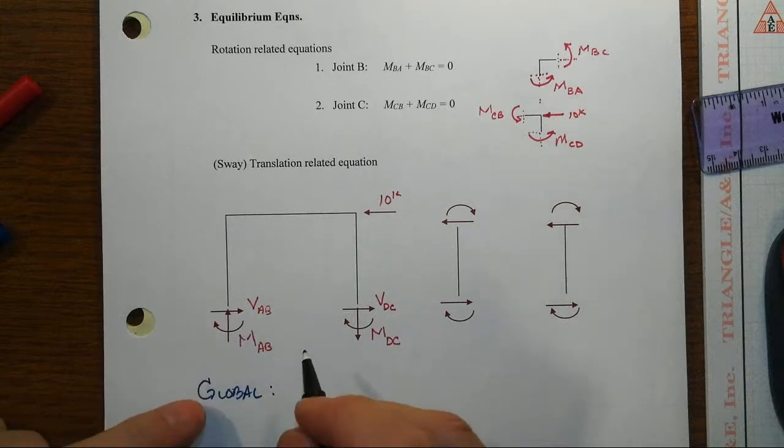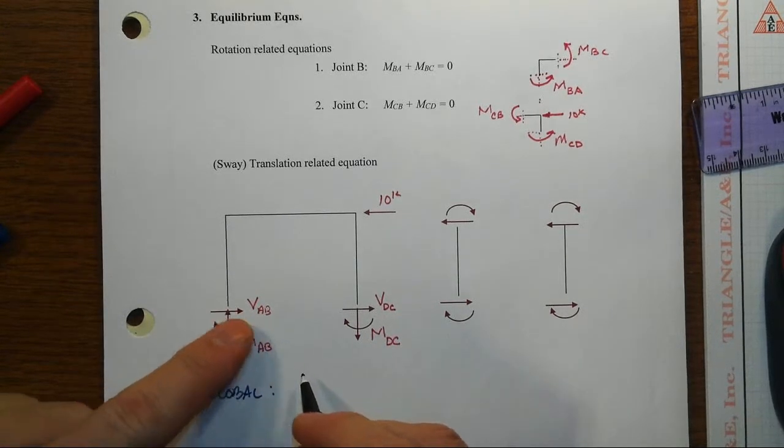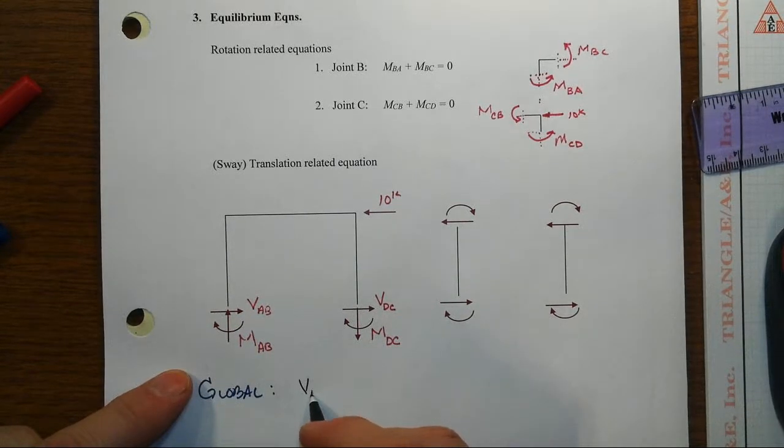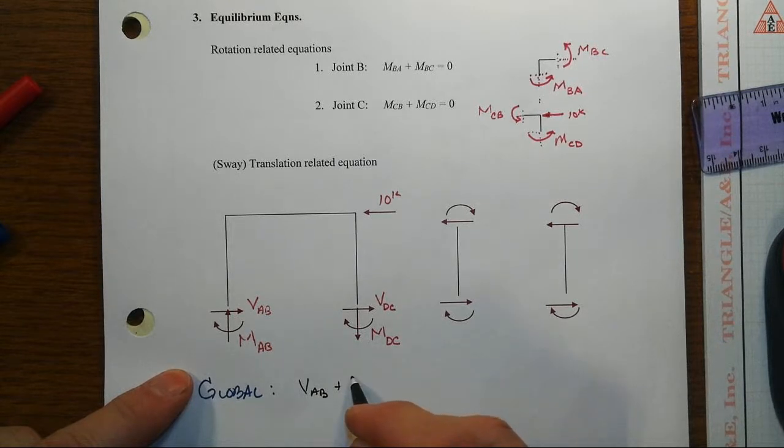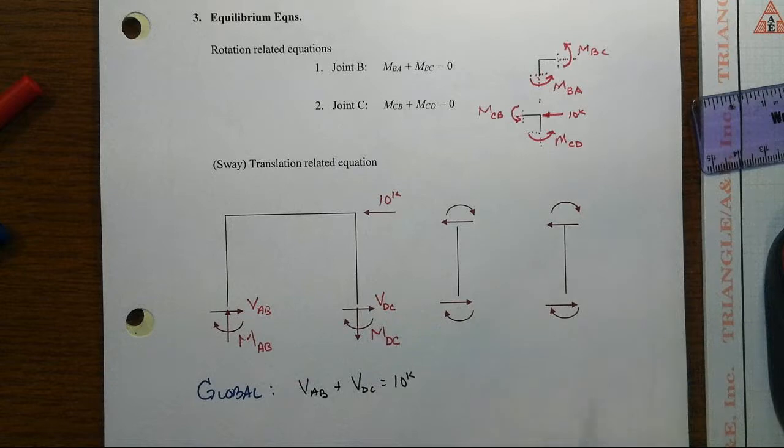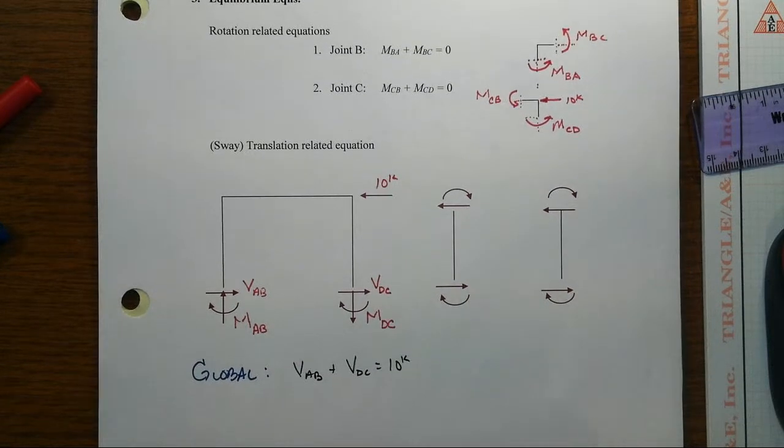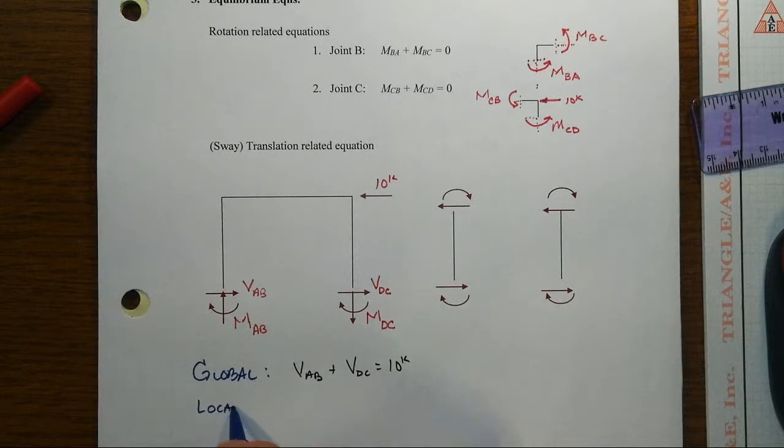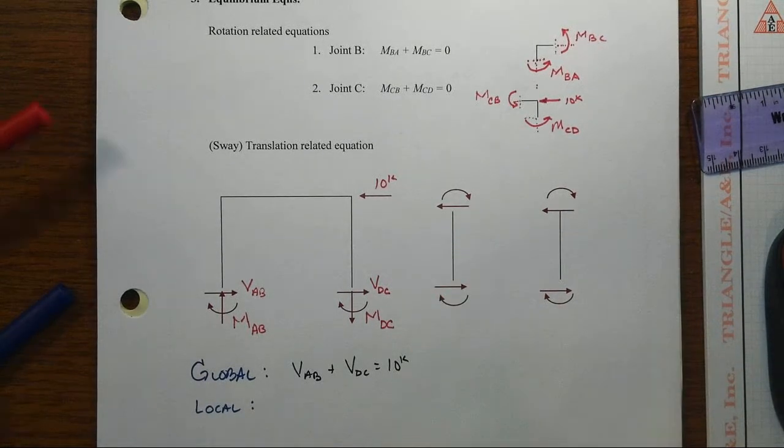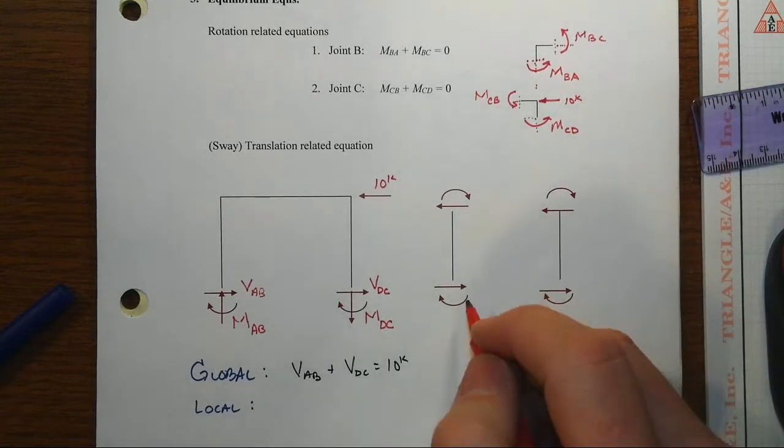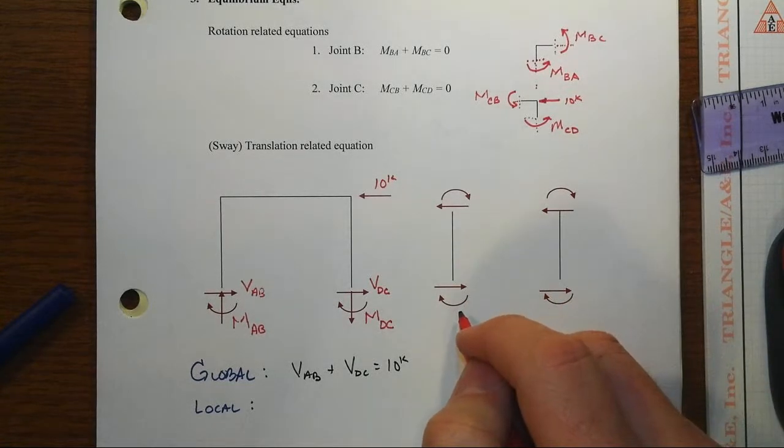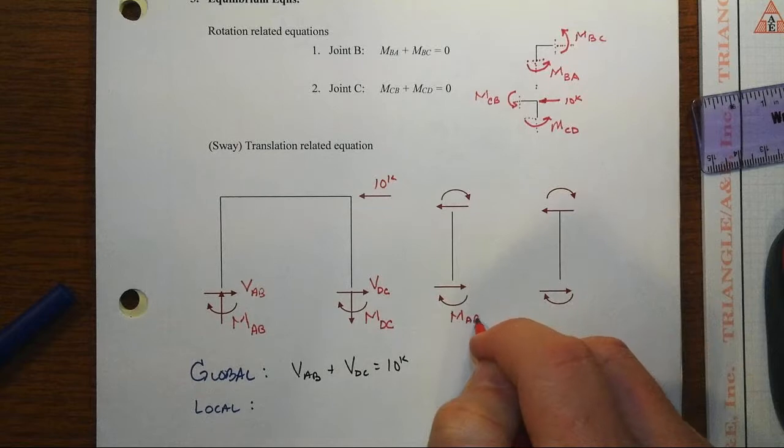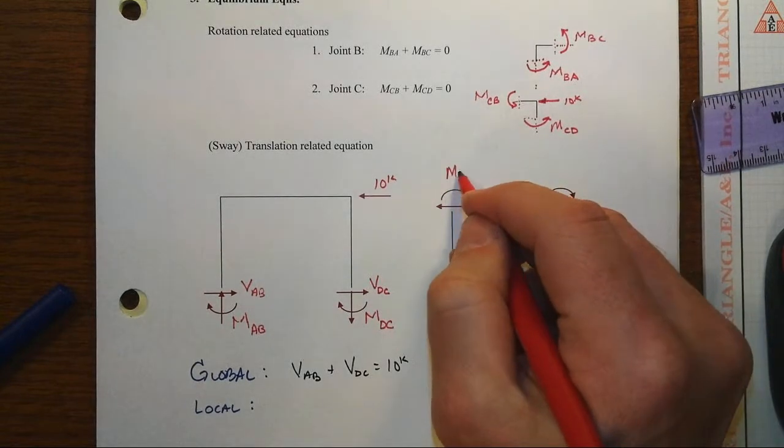We've got VAB plus VDC is equal to 10 kips. It doesn't seem like that's going to help us very much, so what we'll do is we'll go to the local system represented by these free body diagrams over here. We have two columns. We're just going to focus on the left column first.